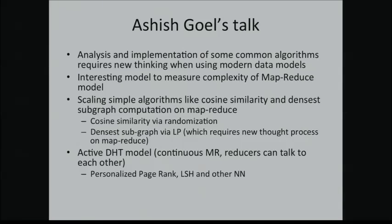The first talk is by Ashish. He talks about analysis and implementation of common algorithms and why they require new thinking for modern data models. In particular, he focuses on the MapReduce model as well as what is called the active DHT model, which is like continuously doing MapReduce but where the reducers can actually talk to each other. He talks about how you could scale algorithms like cosine similarity and subgraph computation in a MapReduce paradigm, as well as personalized PageRank and nearest neighbor calculations in the active DHT framework.